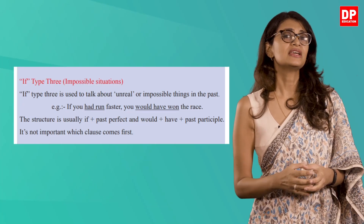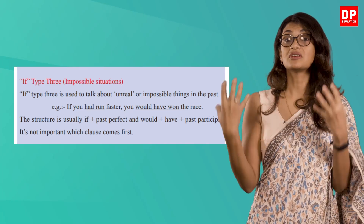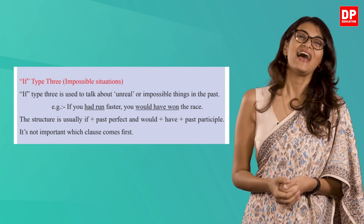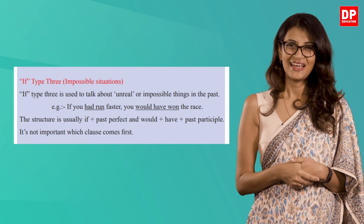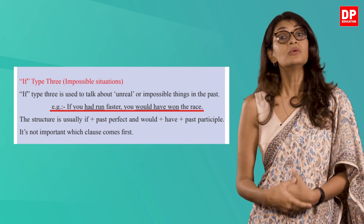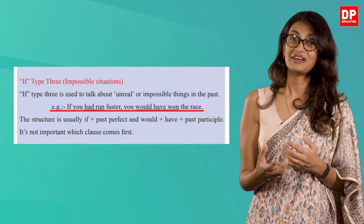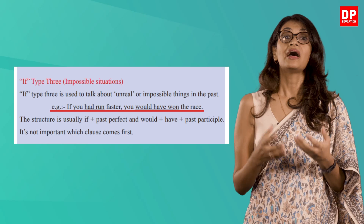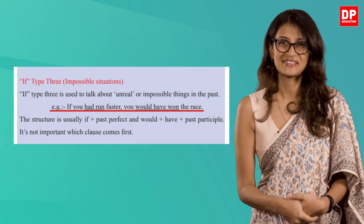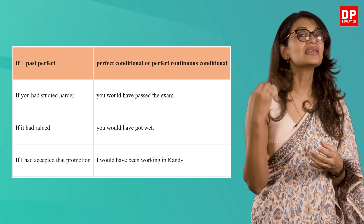If type 3 is used to refer to an unreal past condition and its probable past result. The example given in your book is: 'If you had run faster, you would have won the race.' Look at how it is constructed: if plus past perfect, and would plus have plus past participle — the perfect conditional or the perfect continuous conditional. Let's look at some more examples to give you a clearer understanding.